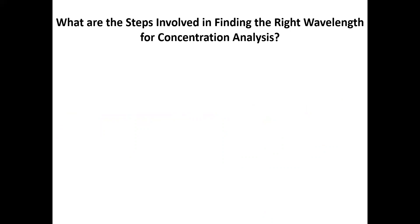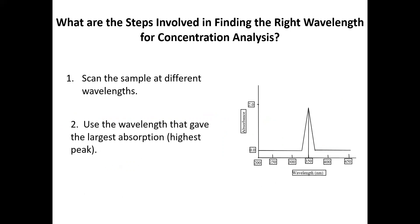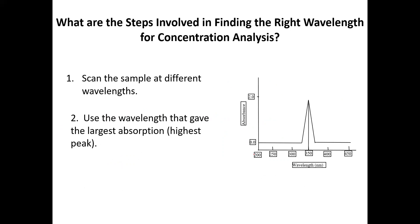What are the steps involved in finding the right wavelength for concentration analysis? Let's say we discovered a molecule and want to determine its concentration. We scan the sample at different wavelengths — 200 nm, 250 nm, 300 nm, etc. — and find that it has a maximum absorption at 350 nm, so we measure its concentration at 350 nanometers. For total proteins, we use 280 nanometers or 595 nanometers, as this is where the maximum absorption for proteins occurs.